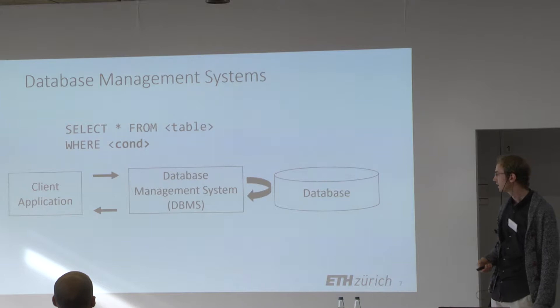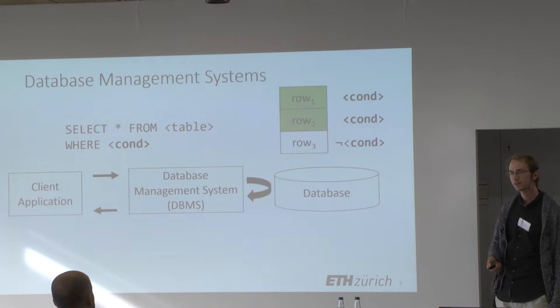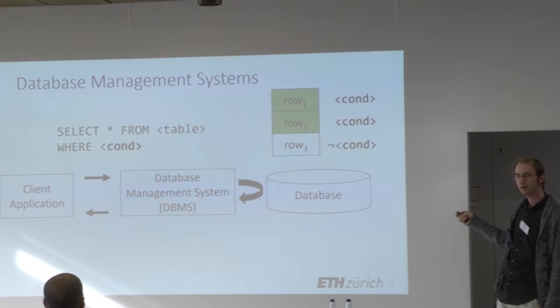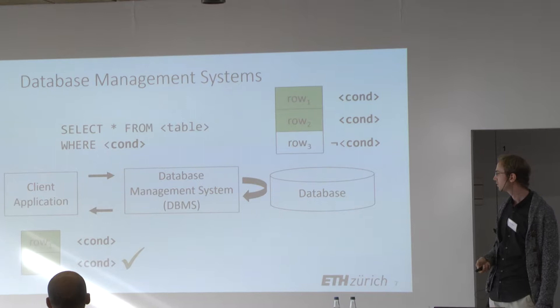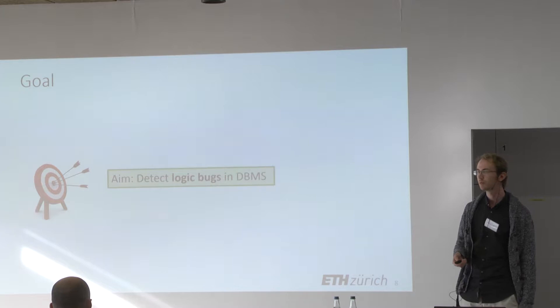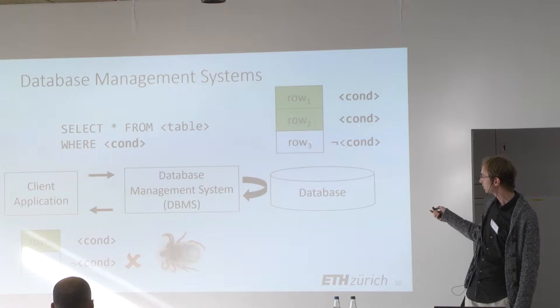The general architecture of such a system looks like this. A client application sends a query to the database management system, which goes through all relevant records, evaluating whether the condition evaluates to true or false. Here we have two rows for which the condition evaluates to true, and the system is expected to fetch those two records. In our work, we aim to detect logic bugs — those bugs where the system computes an incorrect result set. An example logic bug would be that row one and row three are fetched, omitting row two even though its condition evaluates to true, or row three is fetched even though its condition evaluates to false.